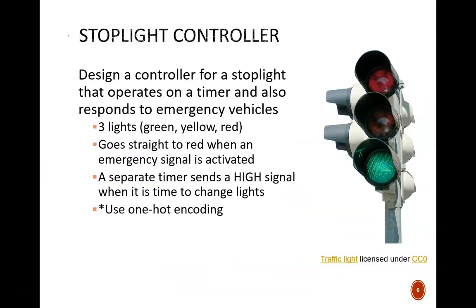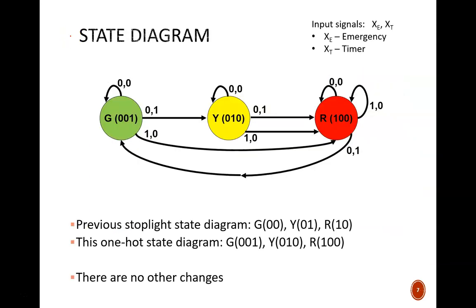Here is the exact same problem statement we saw before, but with one more bullet that explicitly says we must use one hot encoding. The impact on our state diagram is minimal. We have the same three states: green, yellow, red, and we have the same three arrows leaving each state: emergency signal, timer signal, or neither. The only difference is the state codes.